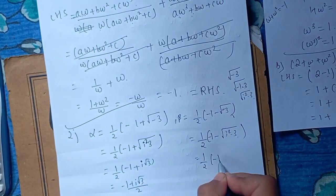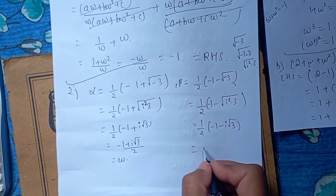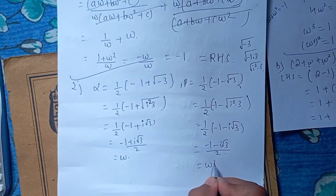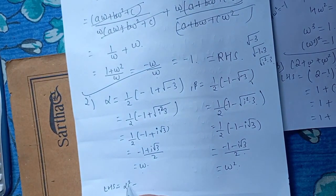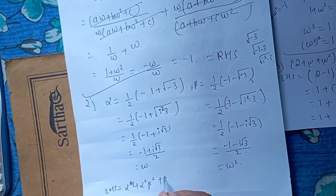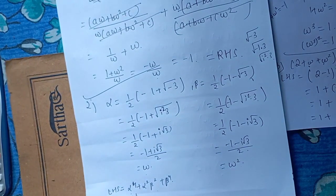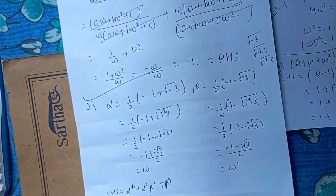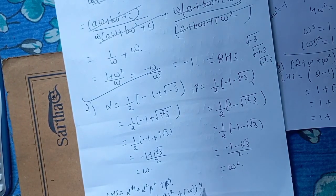1 by 2 minus 1 minus i root 3 by 2 is omega square. Alpha squared plus alpha squared plus alpha squared omega square is omega square plus omega square plus alpha square, which is omega square plus alpha square, giving omega square.